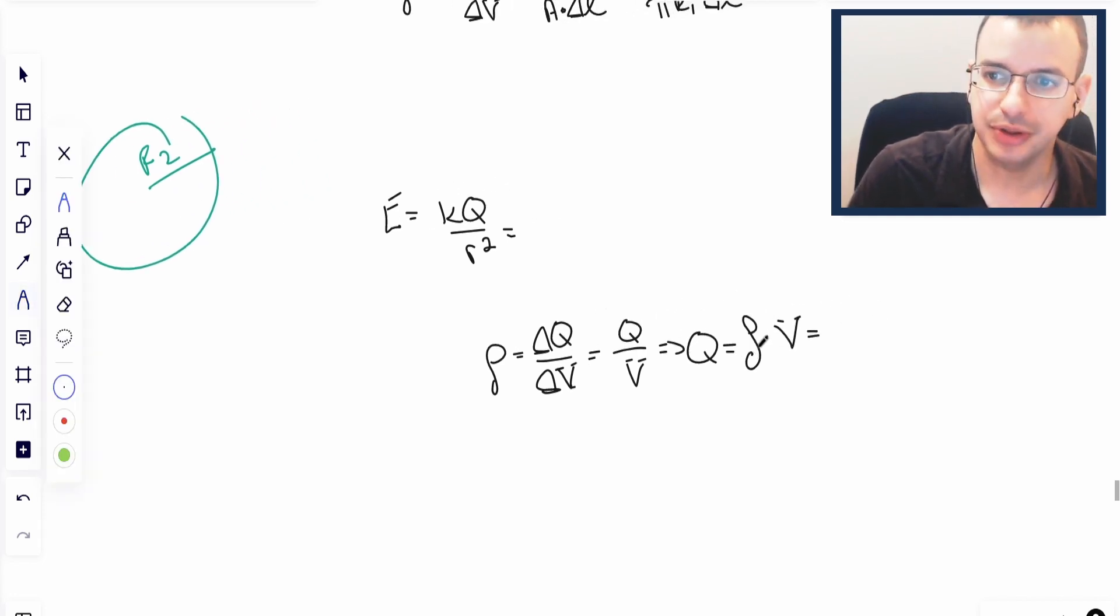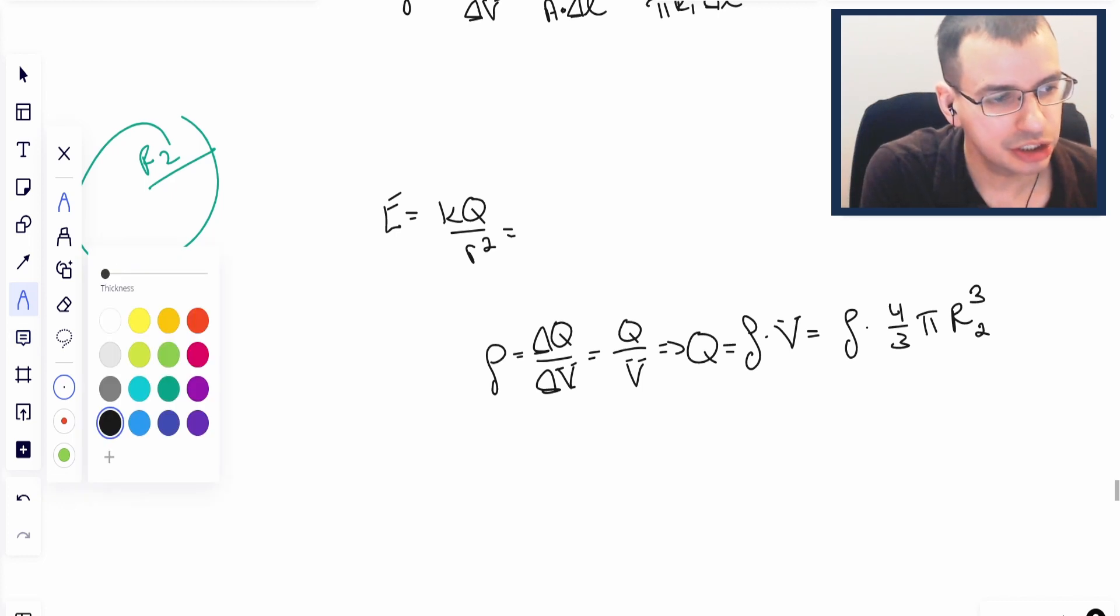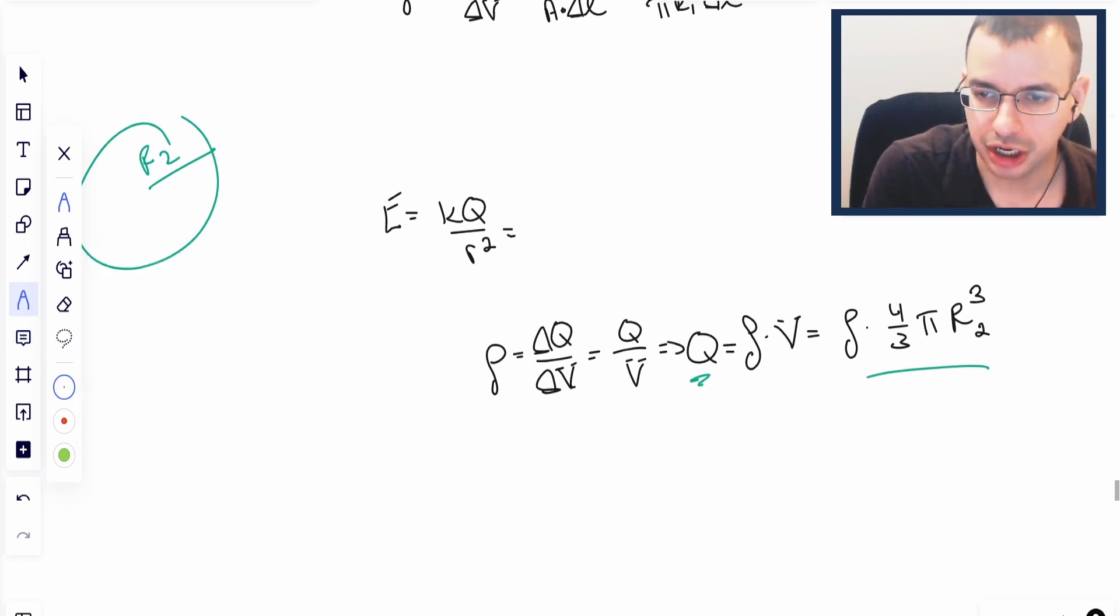We can rearrange this as Q equals rho times volume. This volume is just going to be the volume of the sphere, so rho times 4 thirds pi R cubed. Volume of a sphere is 4 thirds pi R cubed, and this is R2 cubed. So we can rewrite Q in terms of rho.